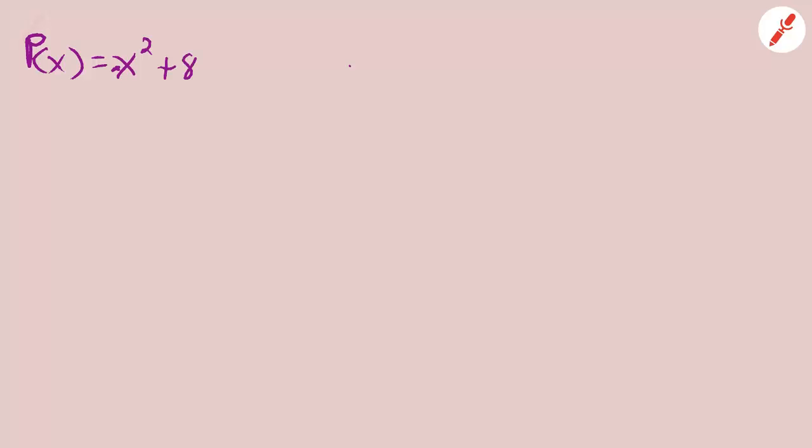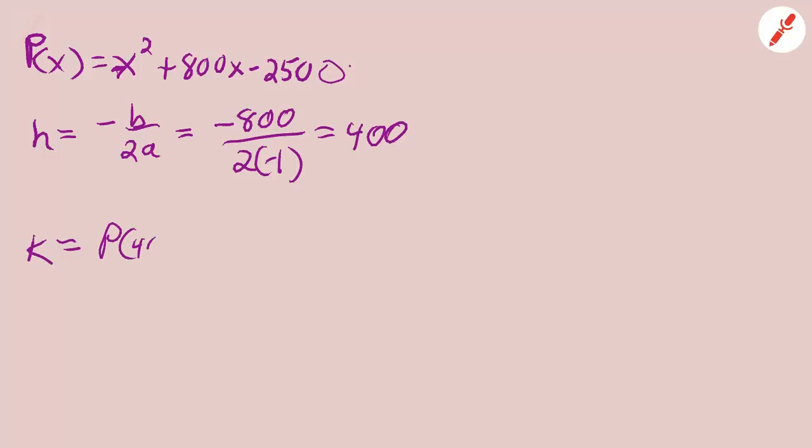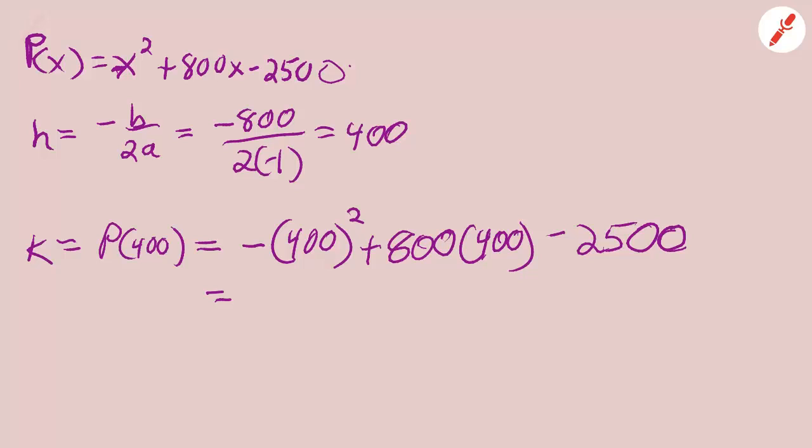Here's our profit function again. Yes, I left a zero off, but I am going to come back and fix that. Bothers me. All right, so we have here that h is 400. So we take 400 and we put it in for all of the x's in the profit function. And then we calculate the answer. There, I fixed it. Yay.